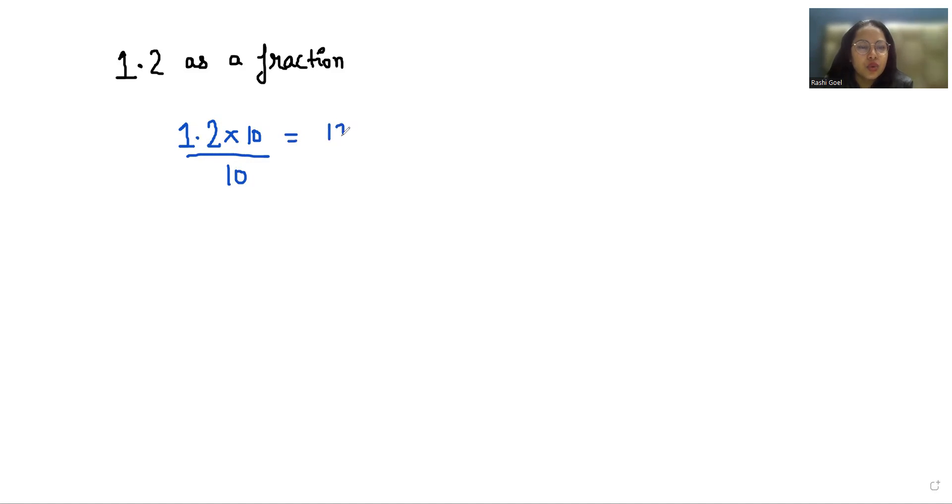This gives us 12 in the numerator and 10 in the denominator. Now both are even numbers. We are going to convert into simplest form, so we'll divide by 2 in the numerator as well as in the denominator. This gives us 6 by 5.